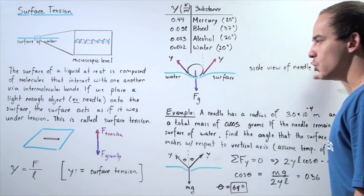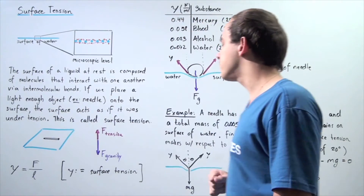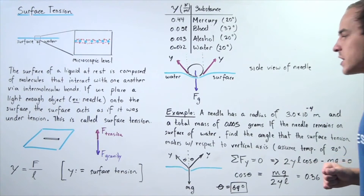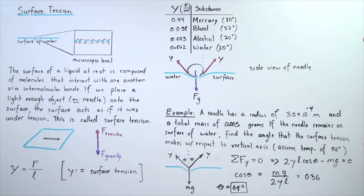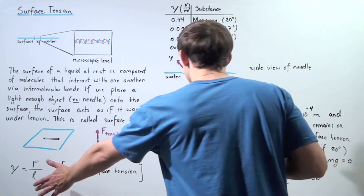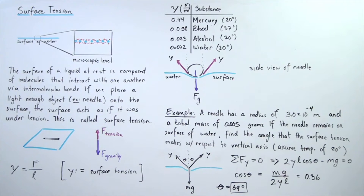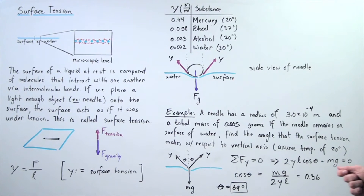This is the side view of the needle as it lies on top of the surface of the water. Now, let's solve the following example: a needle has a radius of 3 × 10⁻⁴ meters and a total mass of 0.005 grams. If the needle remains on the surface of the water, find the angle that the surface tension makes with respect to the vertical axis, assuming the temperature of the water is 20 degrees Celsius.